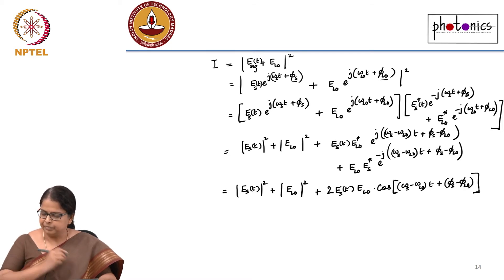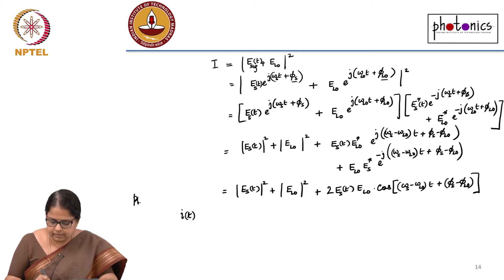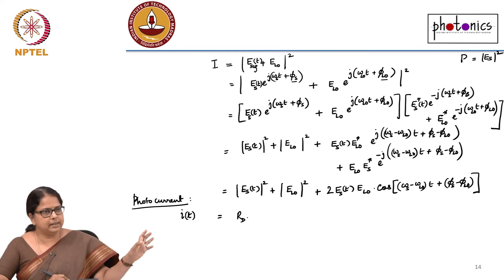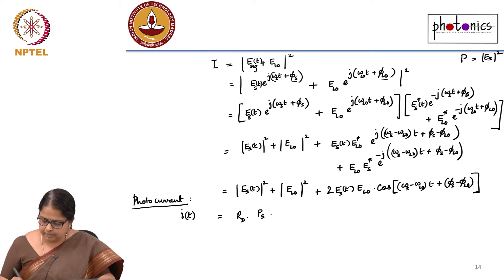This is my intensity, so what is my photocurrent? That is proportional to intensity and the proportionality constant is your responsivity. This is R_d times, I write in terms of corresponding powers. My power, I will approximate or normalize as proportional to E_s^2. There is some area factor there, but I am normalizing everything. This is now P_s + P_LO + 2√(P_s P_LO) cos(...).